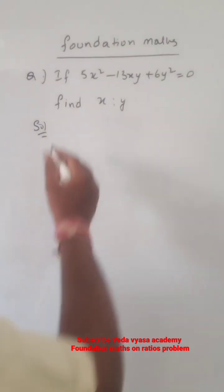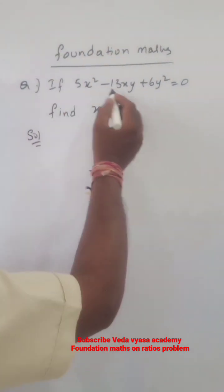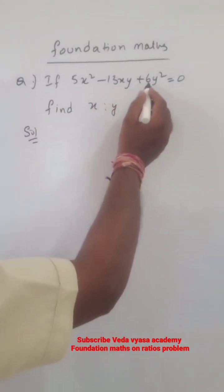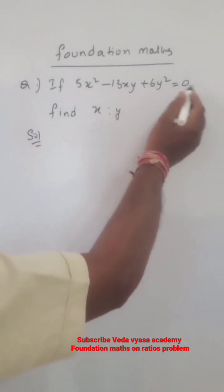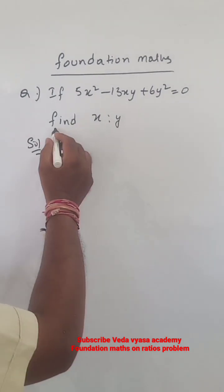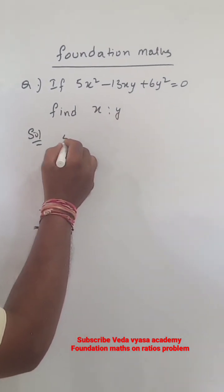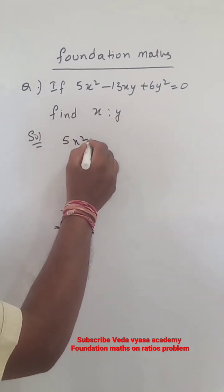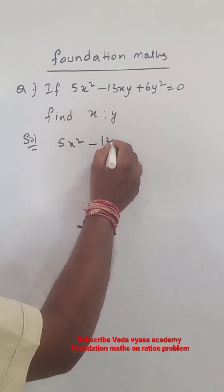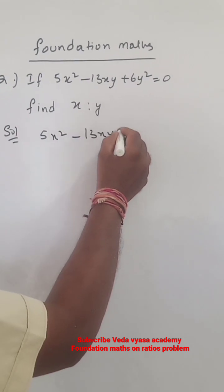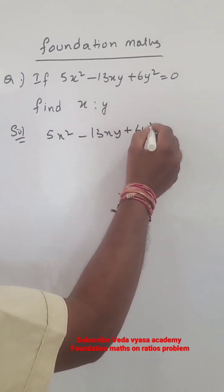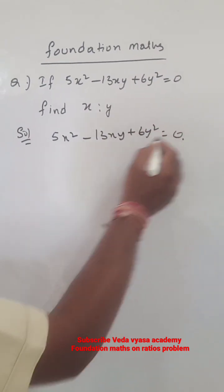Problem on foundation mass. Given: 5x² minus 13xy plus 6y² is equal to 0. Find x is to y.